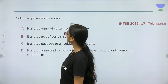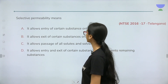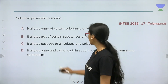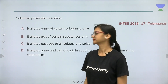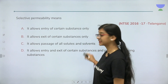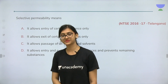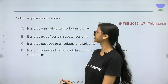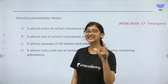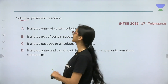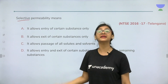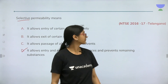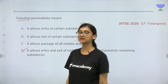Next question: selective permeability means — it allows entry of certain substances only; it allows exit of certain substances only; it allows passage of all solutes and solvents; or it allows entry and exit of certain substances and prevents remaining substances. The correct answer is D — it allows entry and exit of certain substances and prevents the remaining substances. This is from a recent Telangana question paper.